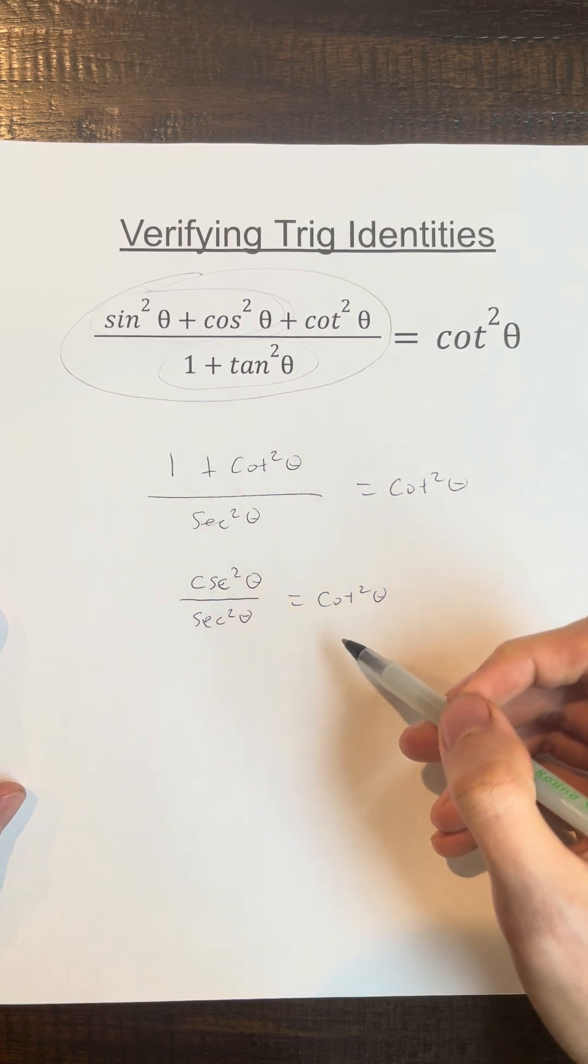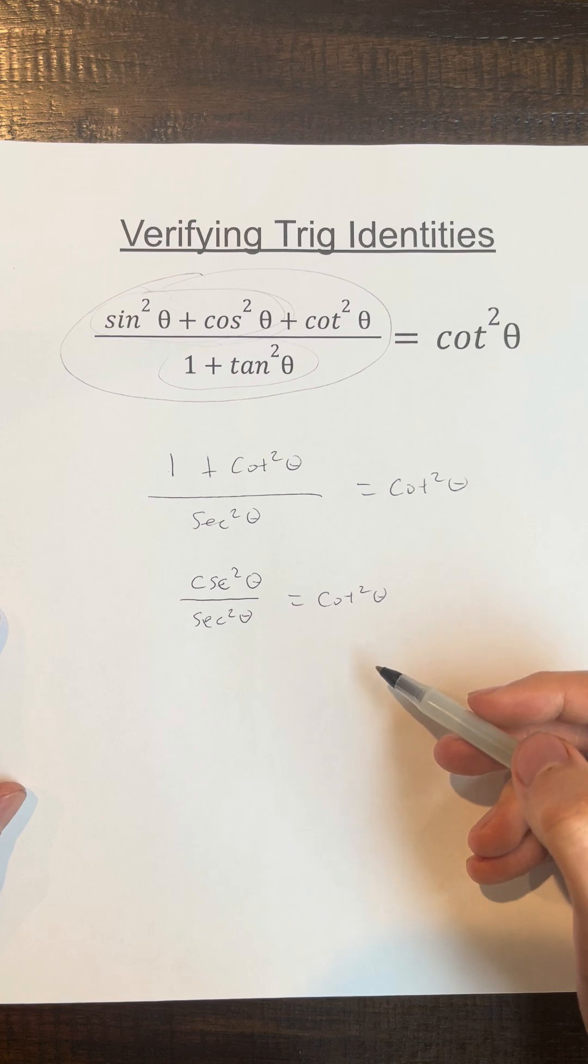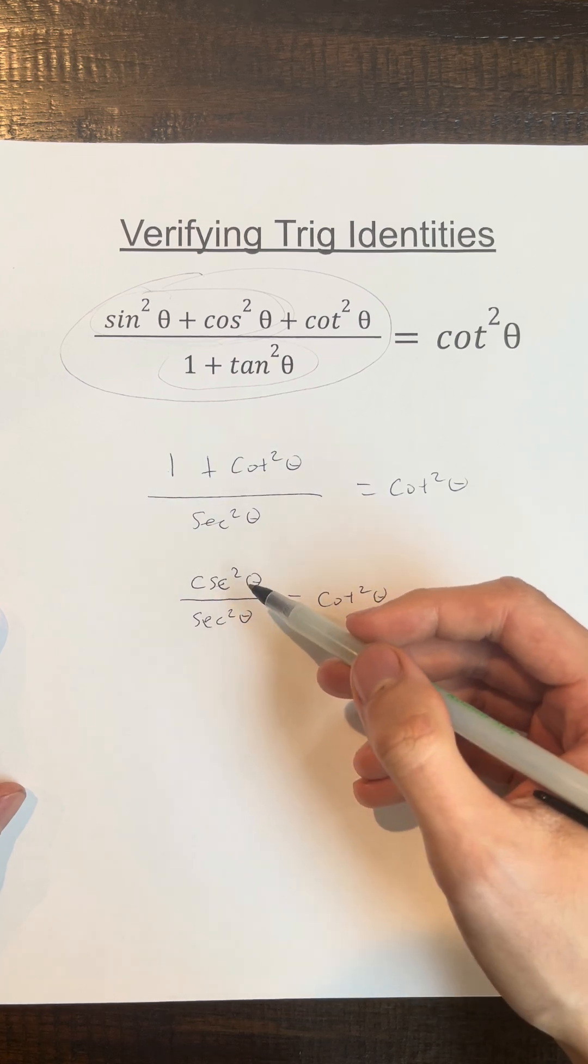Okay, so I see a bunch of reciprocal trig functions, and I can't really simplify any further. So I'm going to change these into terms of sine and cosine.